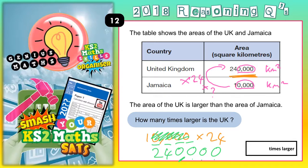Therefore, the area of the United Kingdom is 24 times larger than the area of Jamaica. Thank you.